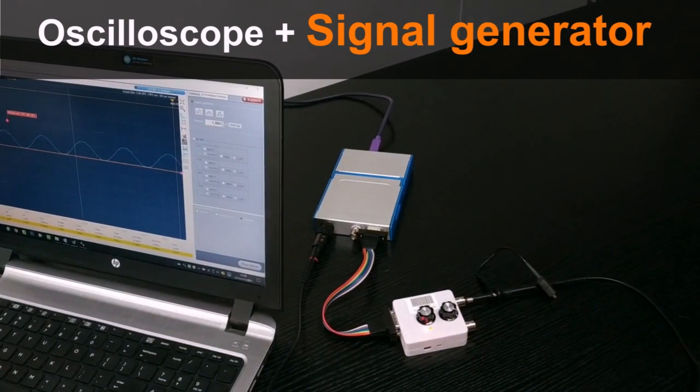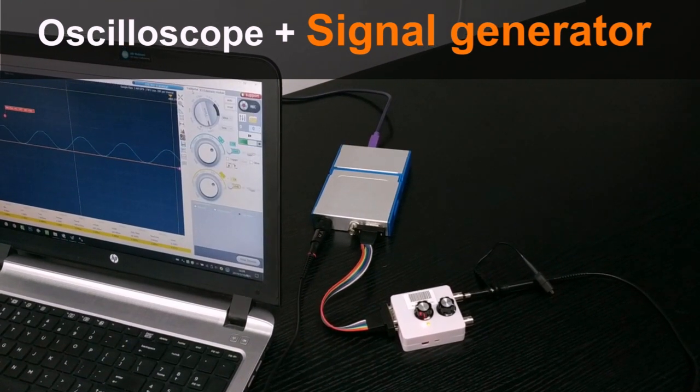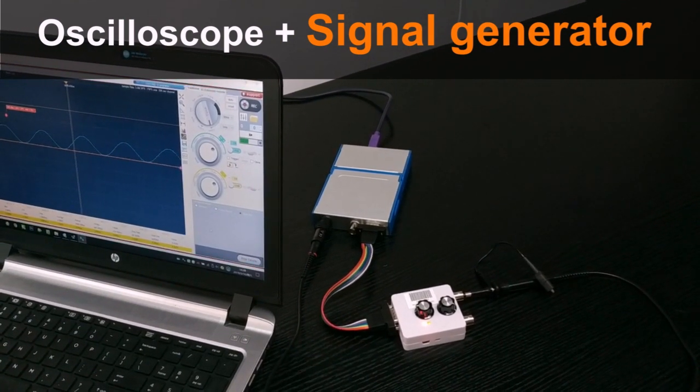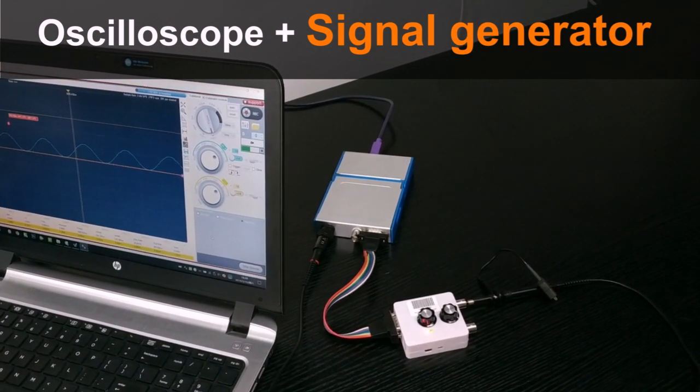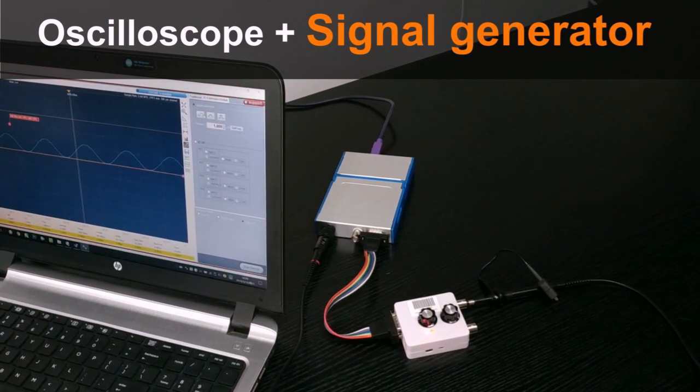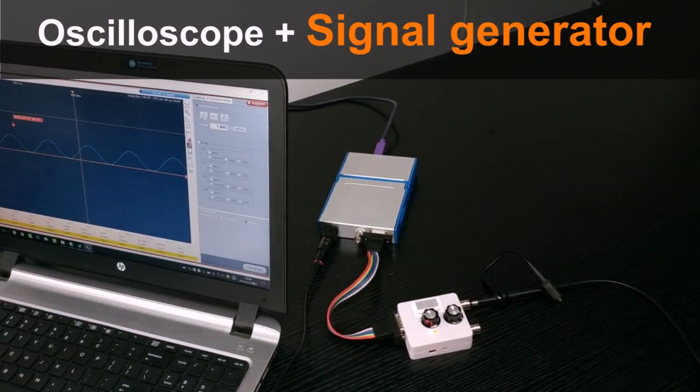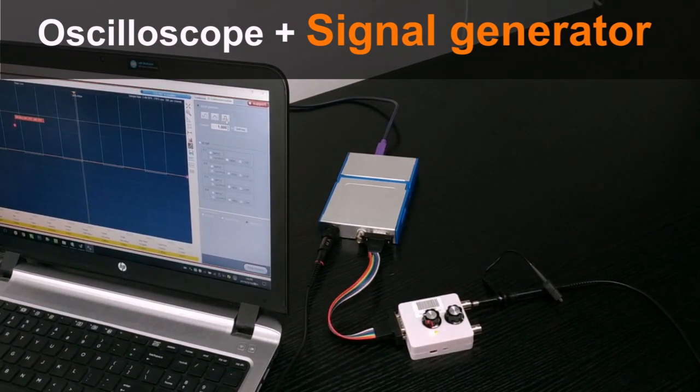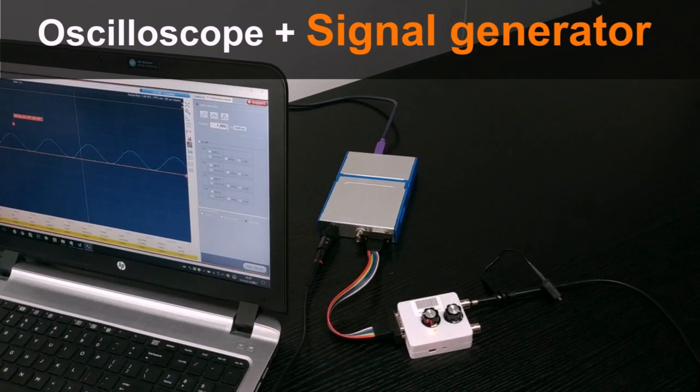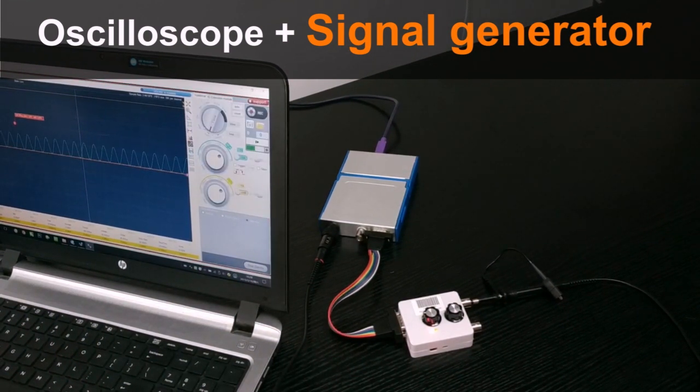We can also add the other channels to the same reference signal. This is the second channel. Now we try to connect also the third channel. As we can see from the software the same digital signal will appear on the other digital channels in the black area. Now we have three digital channels and one analog channel connected. We can connect also the last digital channel now. And we can see in the software that also the fourth channel appears.